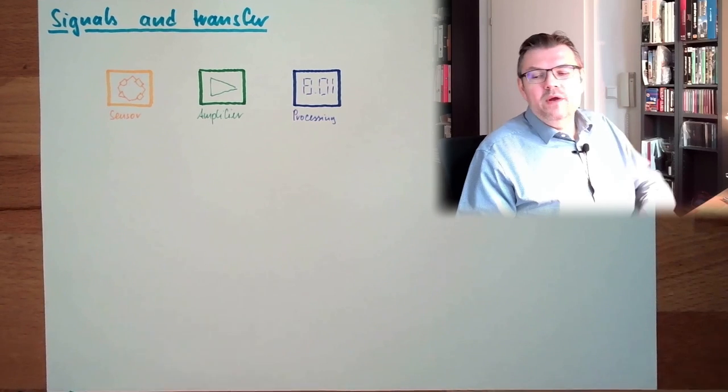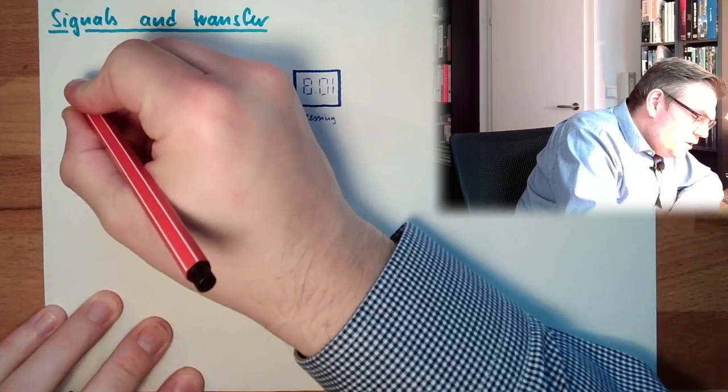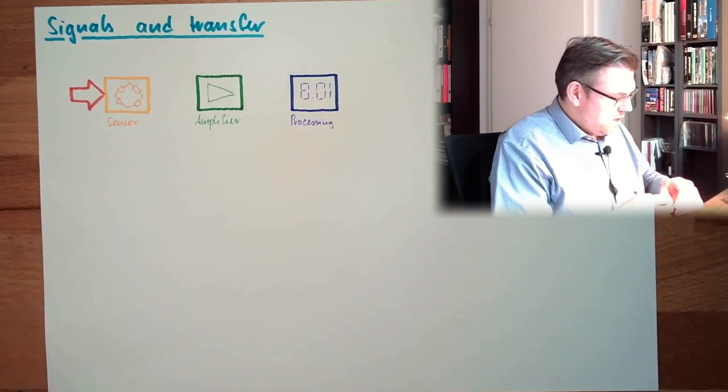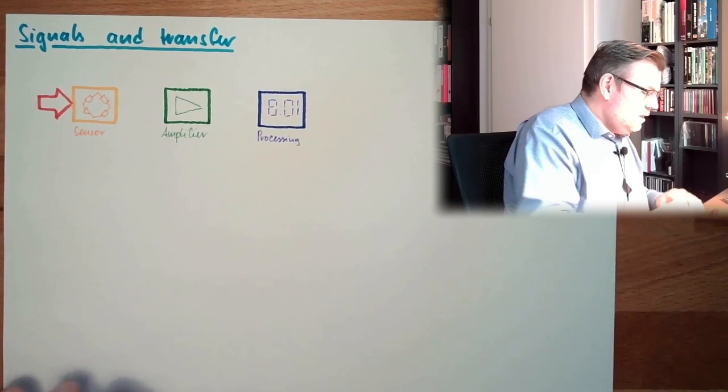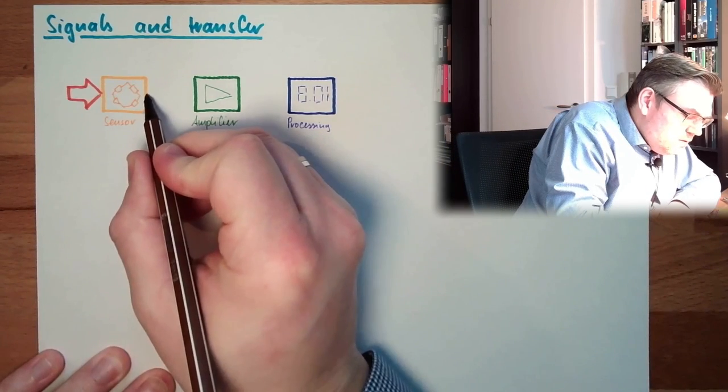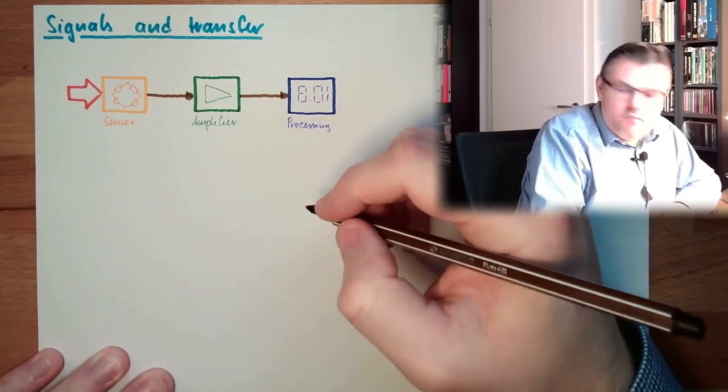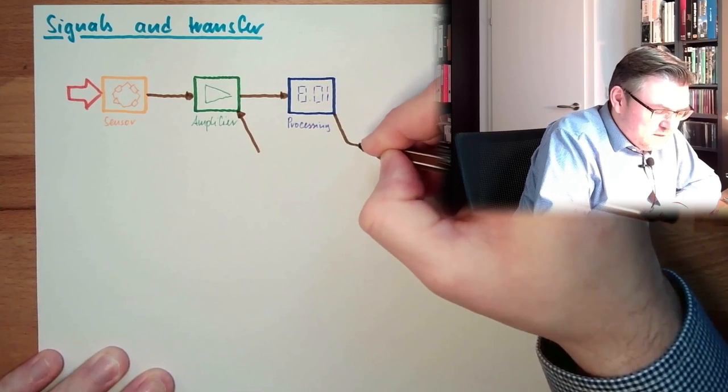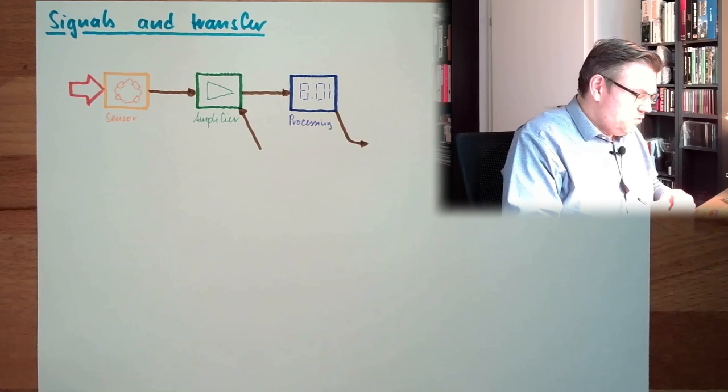So where do we transfer our data? Here is the physical entity which is influencing the sensor somehow. Data is everywhere, because we all need to transfer the whole information from here, to here, to here. Maybe we need to give some information to the amplifier, then we get from the processing some information. So all those things, here we have information transfer.